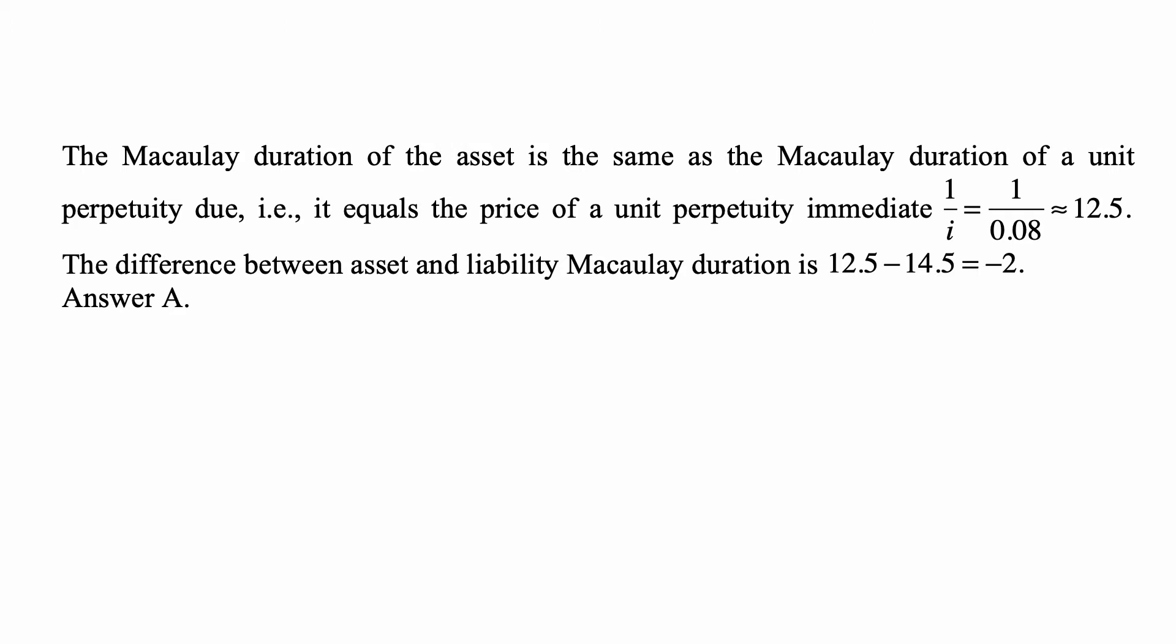The Macaulay duration of the asset is the same as the Macaulay duration of a unit perpetuity due, and it equals the price of a unit perpetuity immediate, 1 over i, which is 1 over 0.08, so it's 12.5.